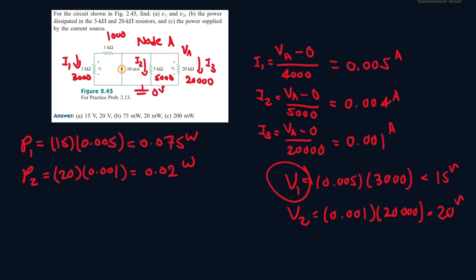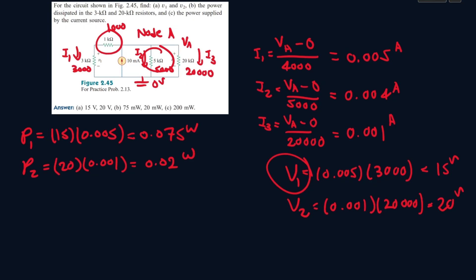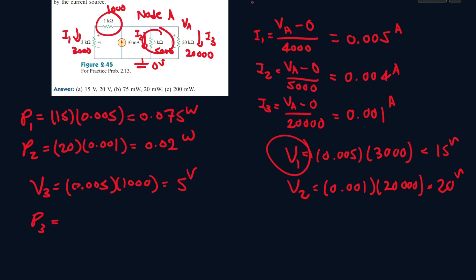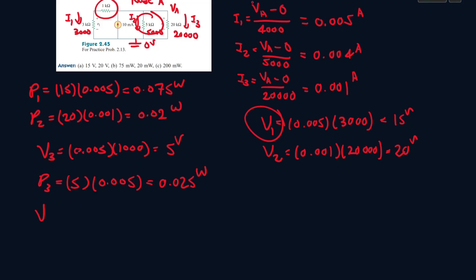To find the power supplied by the current source, we need to find the power in all the remaining components. Let's call the 1 kilohm resistor P3. V3 equals i1 times 1000 ohms: 0.005 times 1000 equals 5 volts. So P3 equals 5 volts times 0.005 amps, which is 0.025 watts.